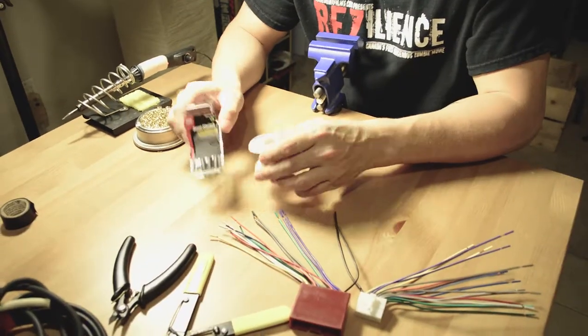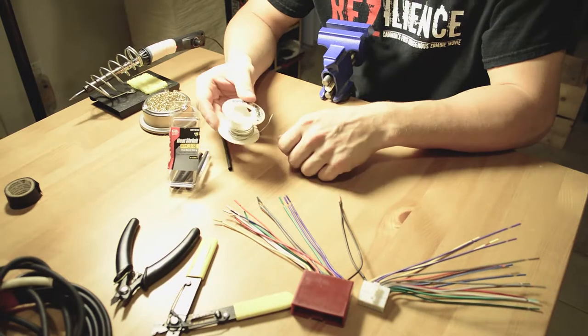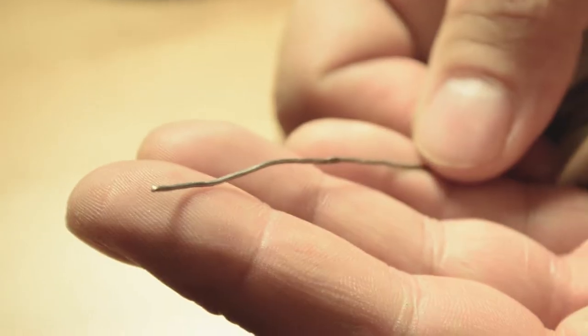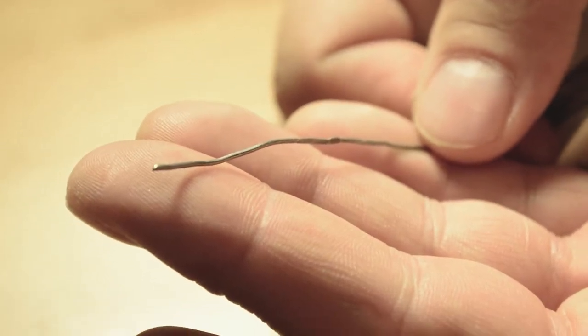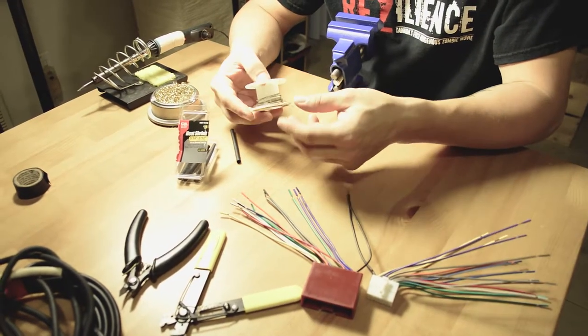The other two things we're going to talk about is solder and shrink tube. This is a 60-40 resin core solder. It's fairly small. It's good for electronics, circuit boards, wires, anything that's of a small gauge.